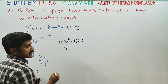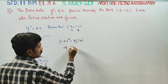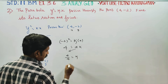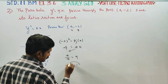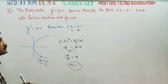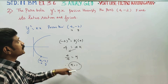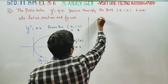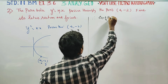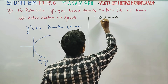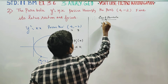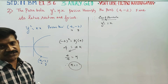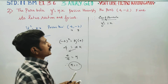(-2)² = k × 4. So 4 = 4k, therefore k = 4/4 = 1. Substituting back, the equation of the parabola is y² = 1·x, that is y² = x.